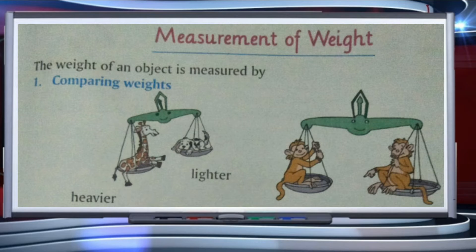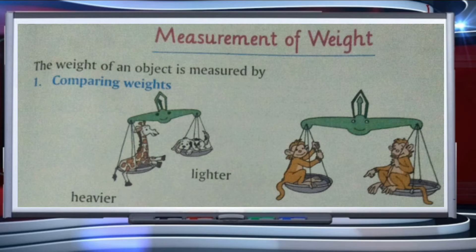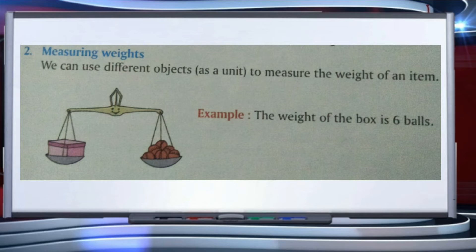We are using a spring balance to measure which object is lighter and which is heavier. First, we have one giraffe and one dog — the giraffe is heavier than the dog. Second, we have two monkeys; both monkeys weigh equal, they have equal weight. Now, the second thing is measuring weight.